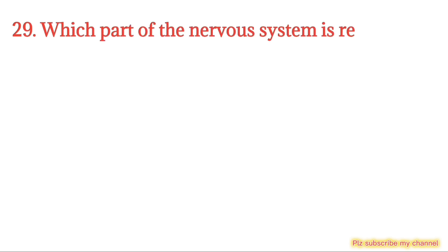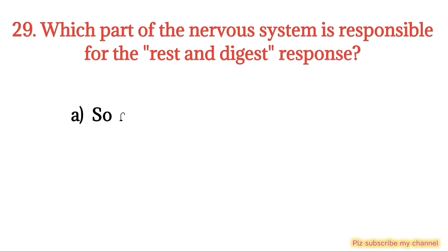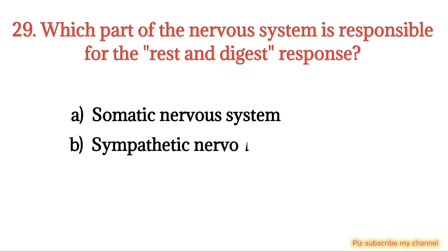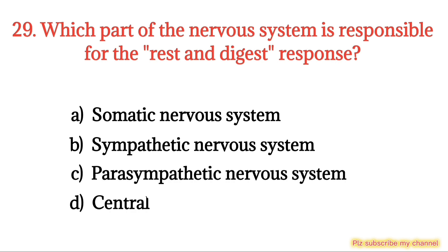MCQ number 29. Which part of the nervous system is responsible for the rest and digest response? Option A: Somatic nervous system. Option B: Sympathetic nervous system. Option C: Parasympathetic nervous system. Option D: The right option is Option C.